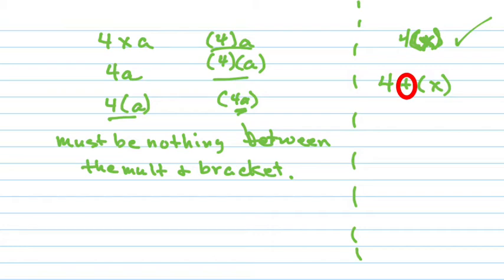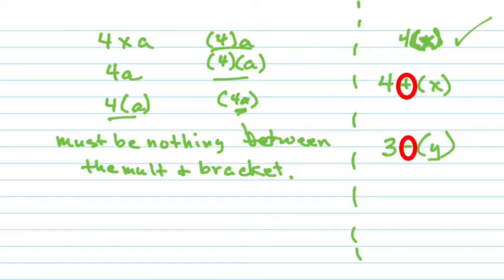How about this one — does that mean multiply? Absolutely not, because there's something between the multiplier and the bracket. The only time it means to multiply is if they're side by side with nothing between them.